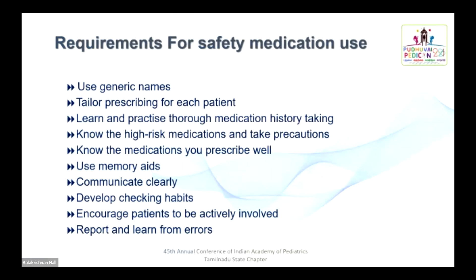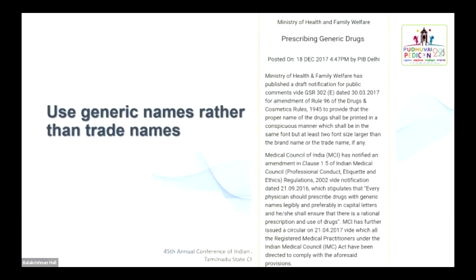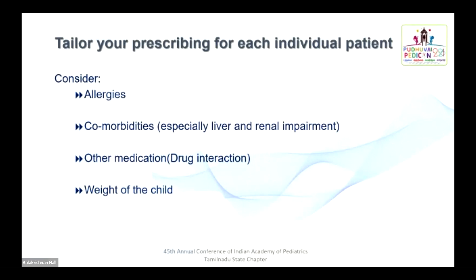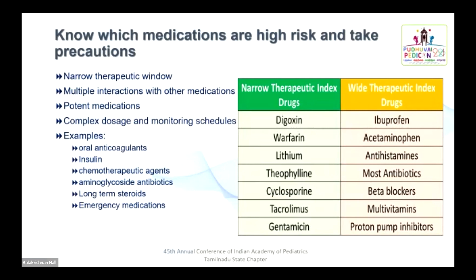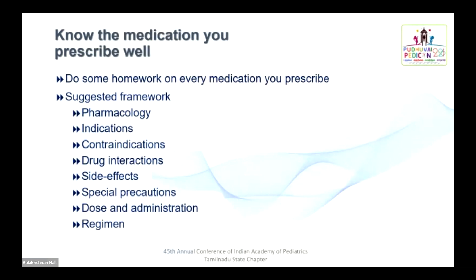How are you going to implement safe medication practice? There are 10 steps. Use generic name rather than trade name — it is mentioned in the MCI Medical Code of Ethics 2016 that writing trade names is strictly prohibited. Tailor your prescribing for each individual patient based on their allergy status, comorbid condition, other medications, and weight. Learn and practice thorough medication history taking, including name, dose, route, frequency, and duration of every drug taken. Enquire about recently stopped medications and over-the-counter medications, dietary supplements, and alternative medicines.